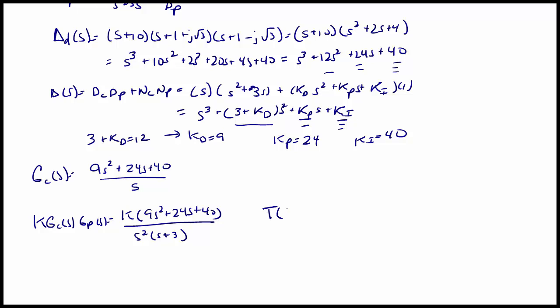And the closed-loop transfer function, T of S, is equal to 9S squared plus 24S plus 40 over S cubed plus 12S squared plus 24S plus 40, which does match our desired characteristic equation. So we know that our design works.